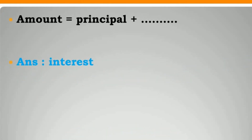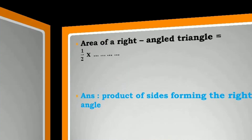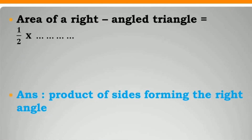Amount is equal to principal plus interest. Area of right-angled triangle is equal to 1 by 2 into product of sides forming the right angle.